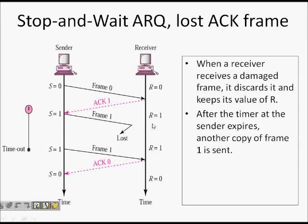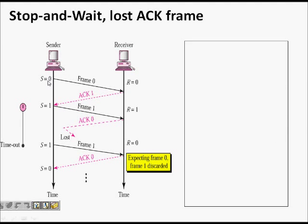Consider the lost ACK case: sender has s equal to zero, sends frame zero. Receiver receives it and sends ACK 1, meaning it now expects frame one. Frame one is sent and received by the receiver, but the ACK for frame one did not reach the sender. A timeout occurs and frame one is sent again. But the receiver has already set r equal to zero, expecting frame zero, so it discards the retransmitted frame one.